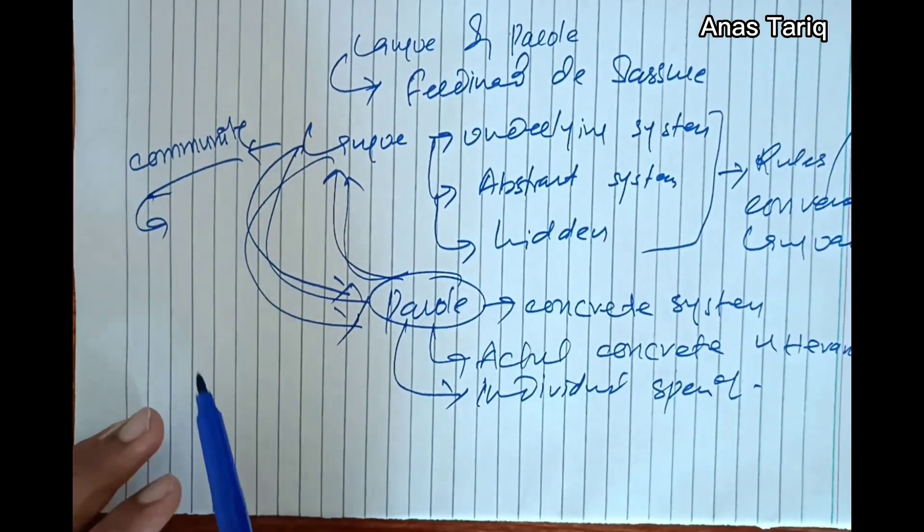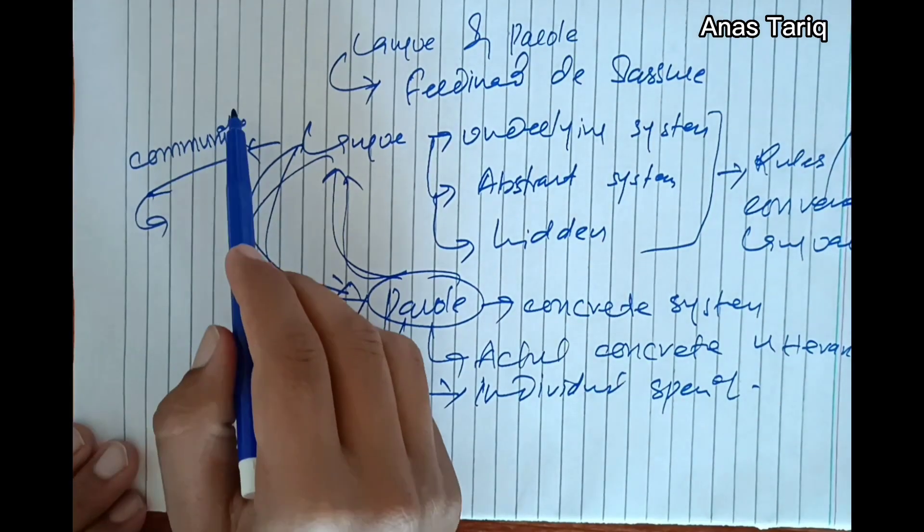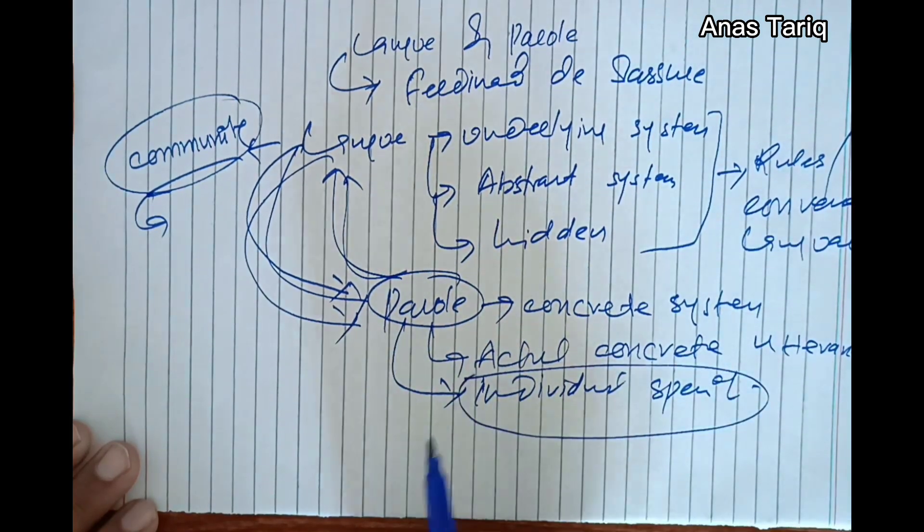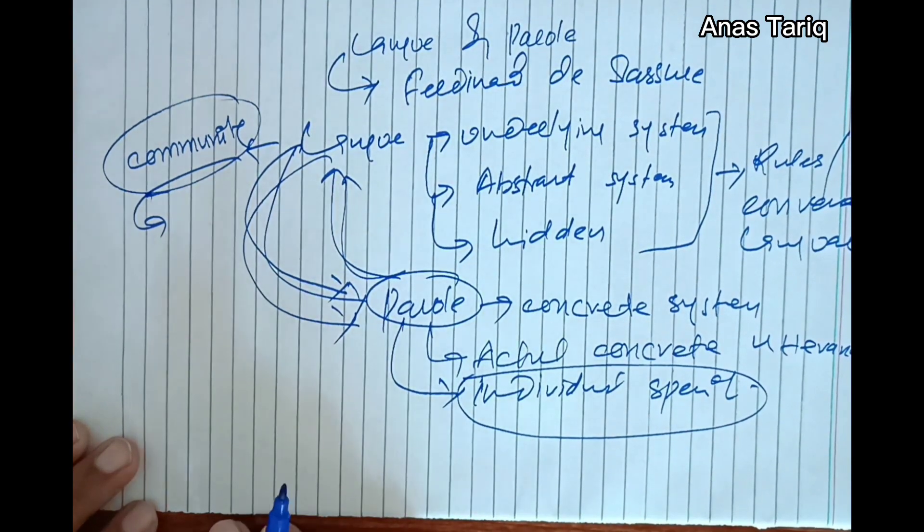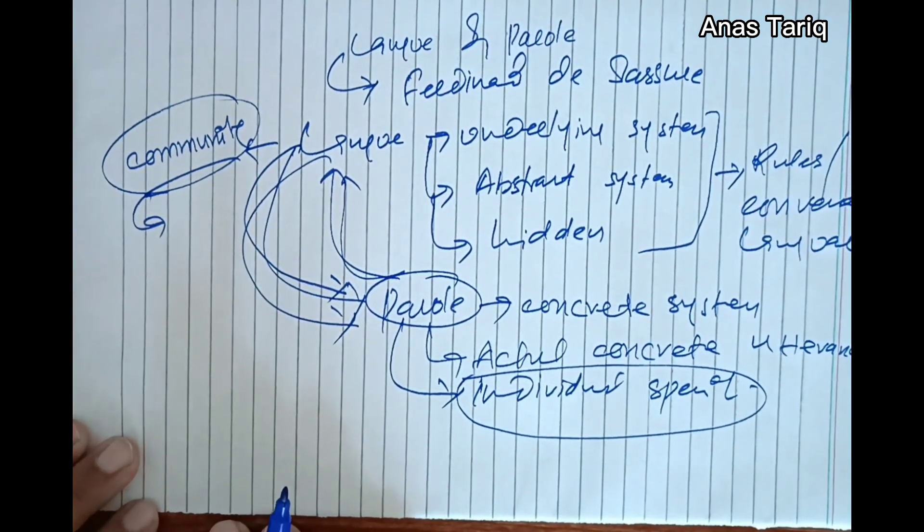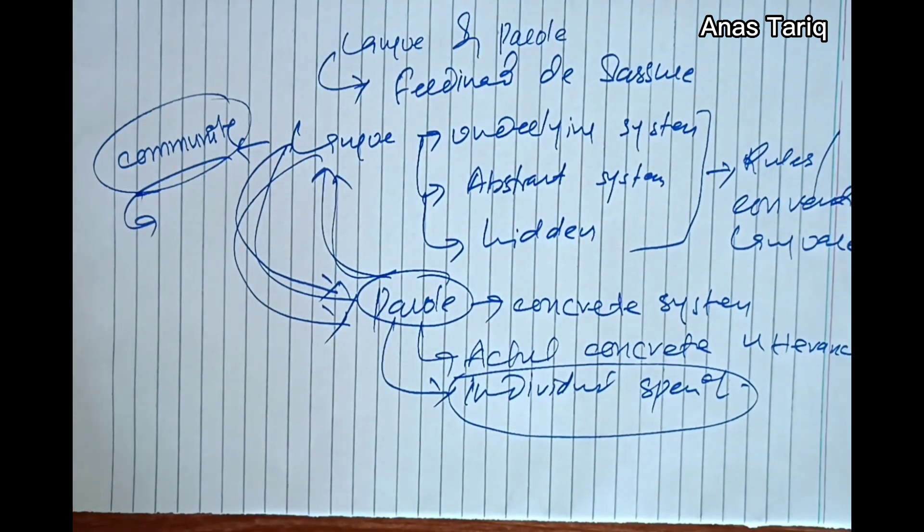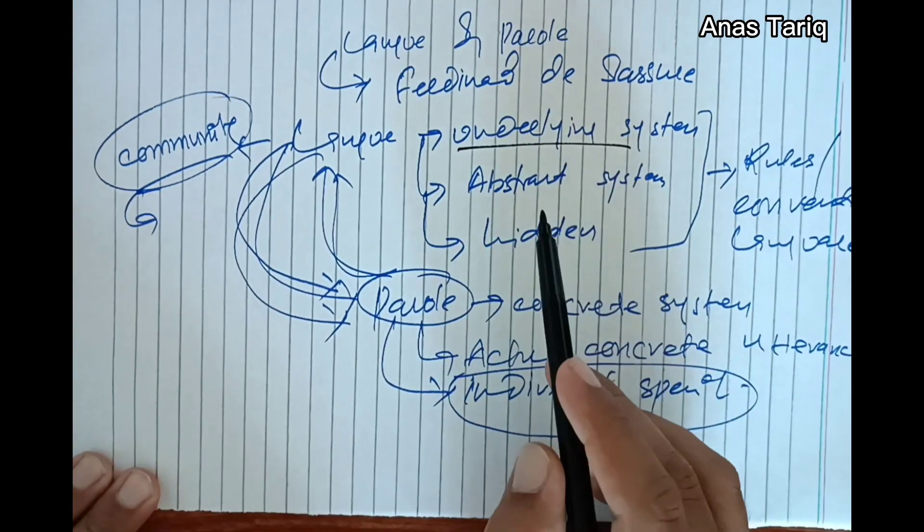We see that every language has certain rules and these rules are shared by community, while every individual uses language in his or her own way. So Parole is individual specific. Conclusively, Langue is underlying system, this is abstract system, this is hidden system.